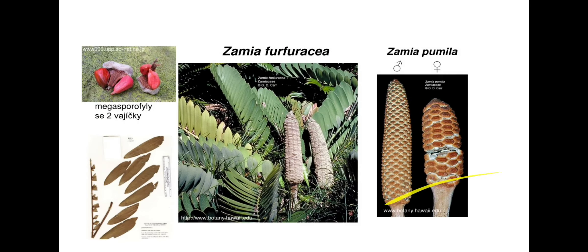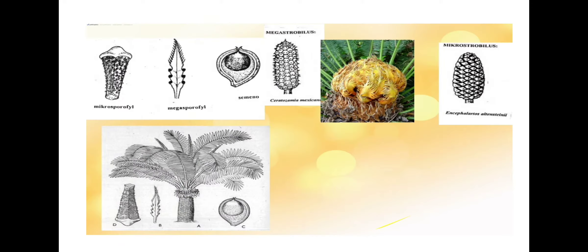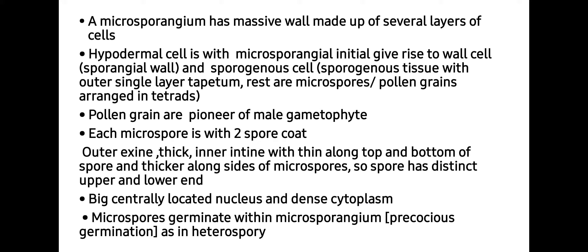Here is the sperm of Zamia. In this image you can see Zamia furfuracea and Zamia pumila bearing cones. A microsporangium has a massive cell wall made up of several layers of cells. Hypodermal cells with microsporangia initials give rise to wall and sporogenous cells. Sporogenous cells differentiate into an outer single-layer tapetum and microspores or pollen grains arranged in tetrads. Pollen grains are pioneers of the male gametophyte. Each microspore has two spore coats: the outer exine and inner intine, which is thin along the top and bottom and thick along the sides. The spore has a distinct upper and lower end with a large centrally located nucleus and dense cytoplasm.